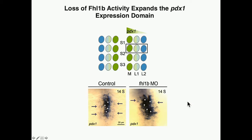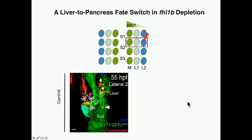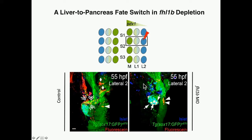We then asked about the fate switch. We know that L2 cells act as hepatic-pancreatic progenitor cells. When we traced the fate of L2 cells after removing FHL1B, we found that the majority of them give rise to pancreatic cells, especially pancreatic endocrine cells, at the expense of liver cells.